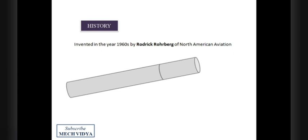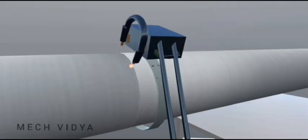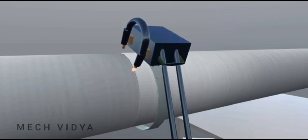Let us see how the welding takes place with the help of an animation. A specialized machine clamps the pipe rigidly.